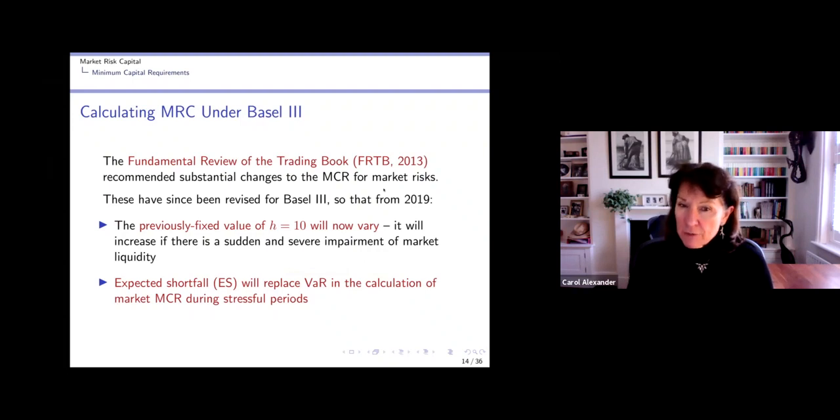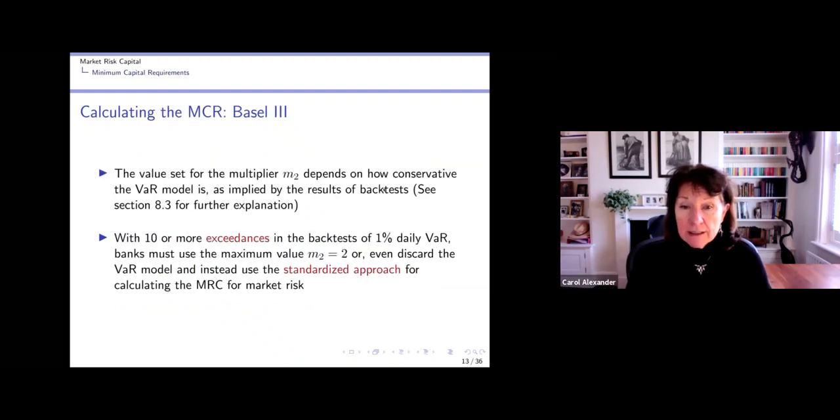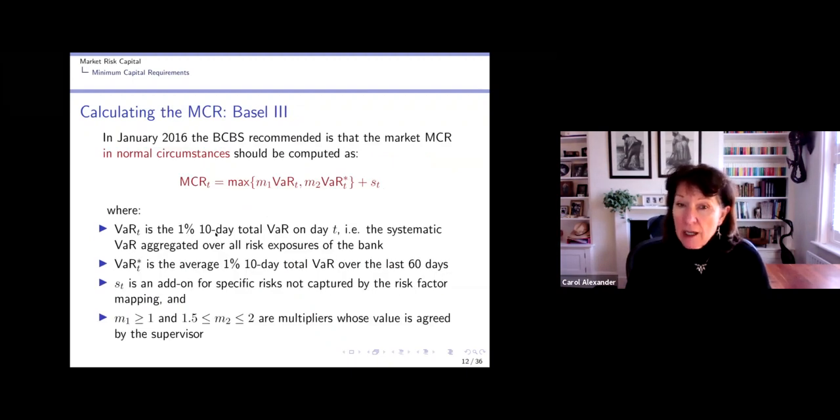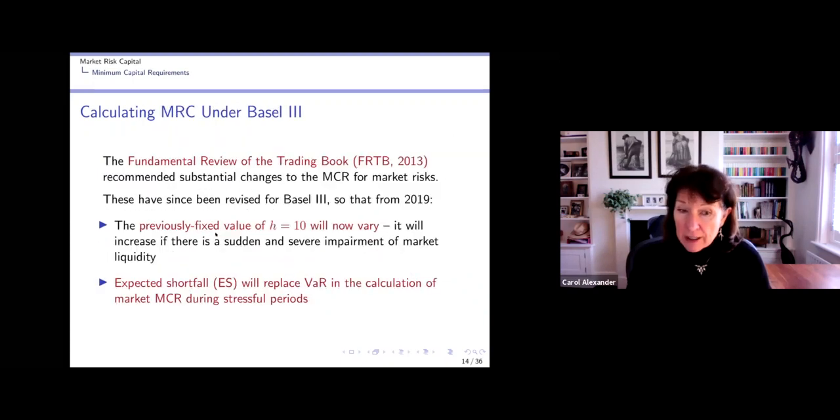And this fundamental review of the trading book, FRTB, that I mentioned before, recommended that the market risk requirement change quite a bit. And in particular, from last year, 2019, instead of having 1% 10-day VaR in these VaRs here, it doesn't have to be 10. This H could vary. And in particular, if there's a sudden and severe impairment of liquidity in the market, then it could increase. So why would liquidity have anything to do with this H factor?